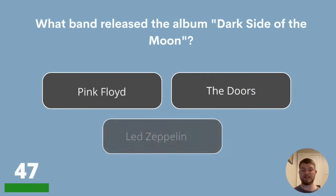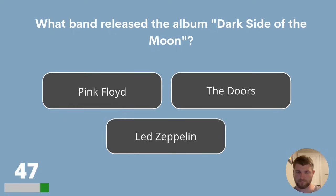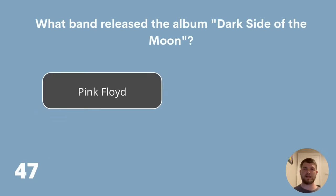Question 47. What band released the album Dark Side of the Moon? Is it Pink Floyd, The Doors or Led Zeppelin? The answer is Pink Floyd.